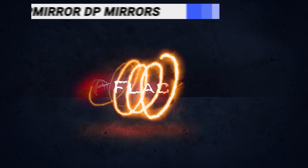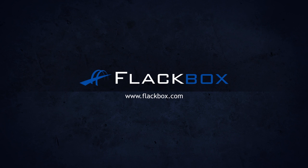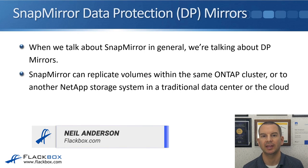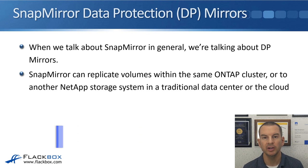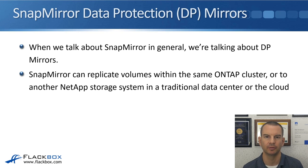In this lecture we'll go into the details of SnapMirror data protection mirrors including how to configure them and how to fail over and fail back in a disaster recovery situation. When we talk about SnapMirror in general it's DP mirrors that we're talking about. SnapMirror can replicate volumes within the same ONTAP cluster but more commonly it's going to be used to replicate data between different clusters.